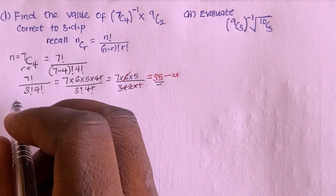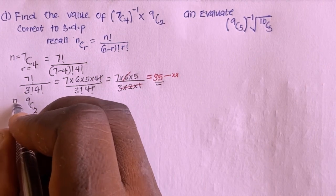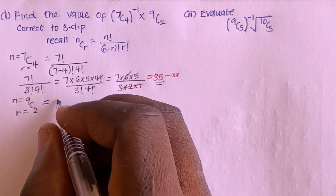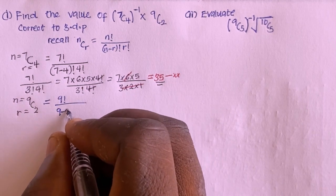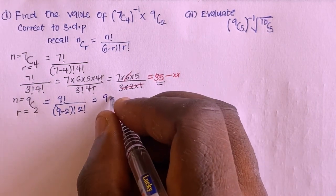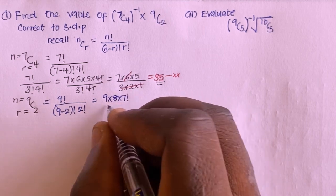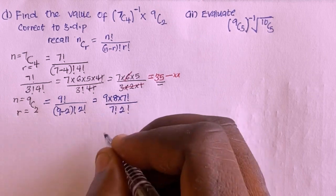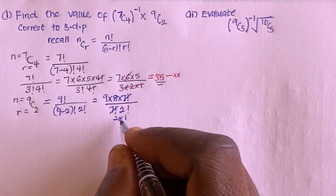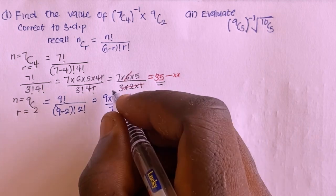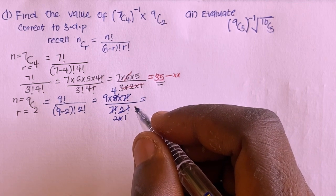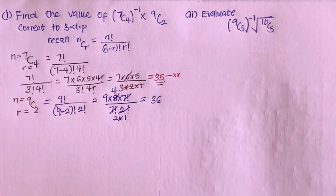Next I need to find 9 combination 2. Here n is 9 and r is 2. This is 9 factorial divided by (9 minus 2) factorial times 2 factorial, which is 9 multiplied by 8 multiplied by 7 factorial, divided by 7 factorial times 2 factorial. The 7 factorials cancel. Since 2 factorial equals 2, and 2 goes into 8 four times, I have 9 multiplied by 4, which equals 36.